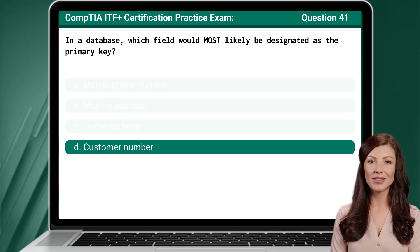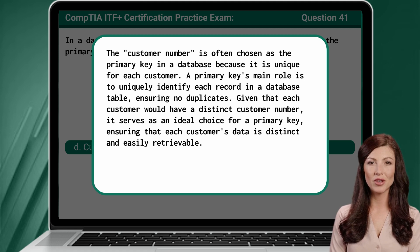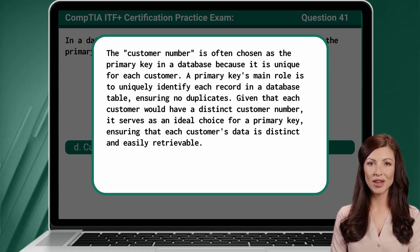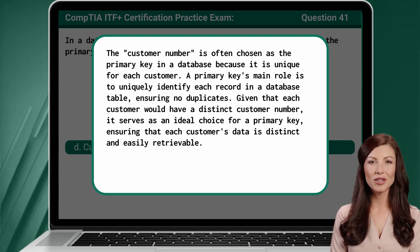The answer is D, Customer Number. The customer number is often chosen as the primary key in a database because it is unique for each customer. A primary key's main role is to uniquely identify each record in a database table, ensuring no duplicates. Given that each customer would have a distinct customer number, it serves as an ideal choice for a primary key, ensuring that each customer's data is distinct and easily retrievable.